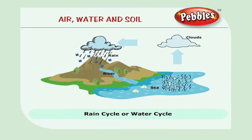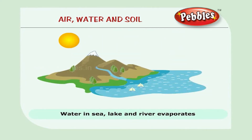We all love the rain, but how do we get the rain? We will learn it now. The water found in the sea, lake and river always evaporates. This is because of the heat of the sun.